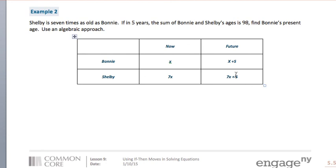And all together, in 5 years from now, Bonnie's age, X plus 5, plus Shelby's age, which is 7X plus 5, will equal 98.